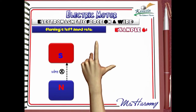The direction of the current is given by the second finger, which is into the page. According to these directions, the wire will be pushed to the right, as shown by the thumb.